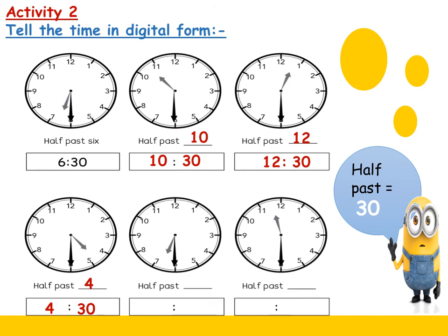The next one: what is the time here? Half past 4 — so in digital form it's 4 and 30 minutes. Excellent, Primary 2. What is the next? It's half past 6 — we choose the smallest number before 7. Half past 6 means 6 and 30 minutes. And here: half past 11 means 11 and 30 minutes. I hope you understood the lesson today — watch it more than one time to get the idea.